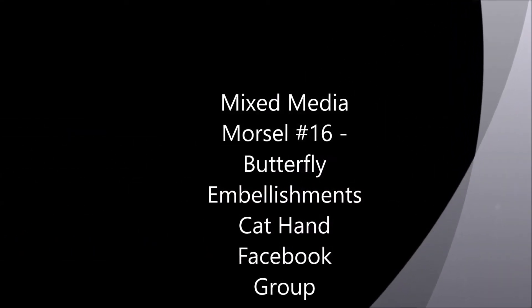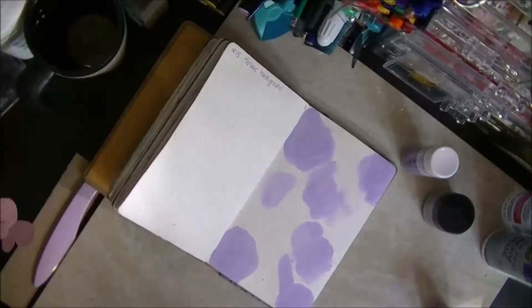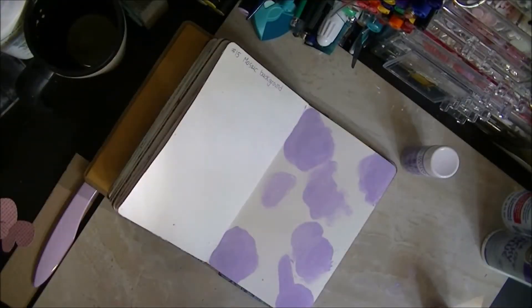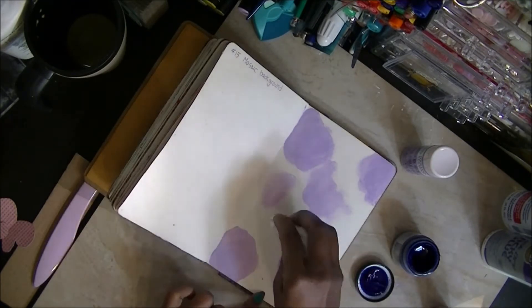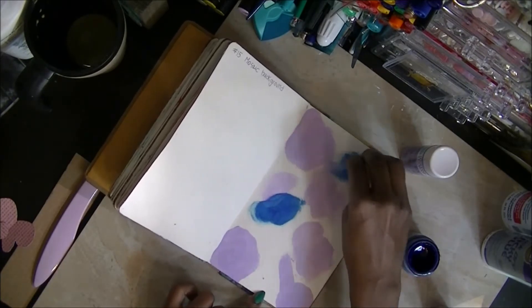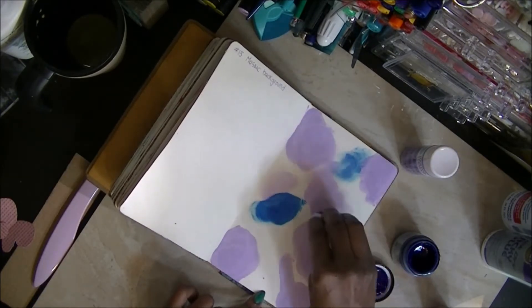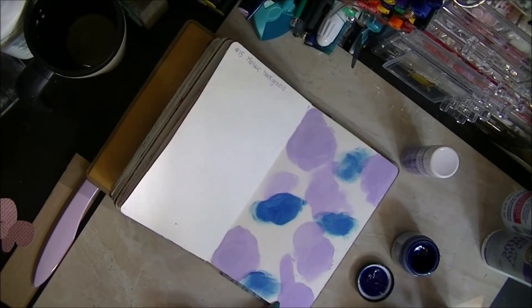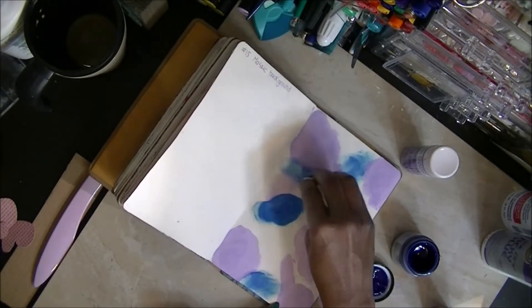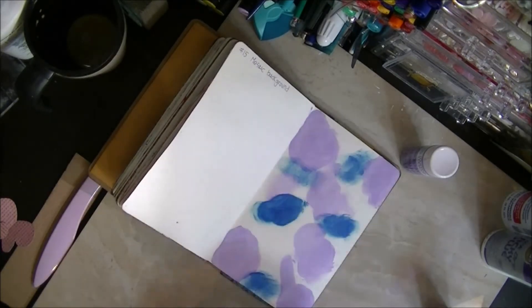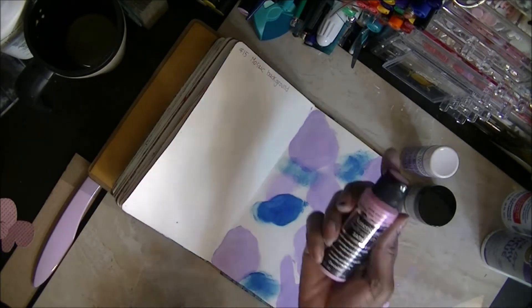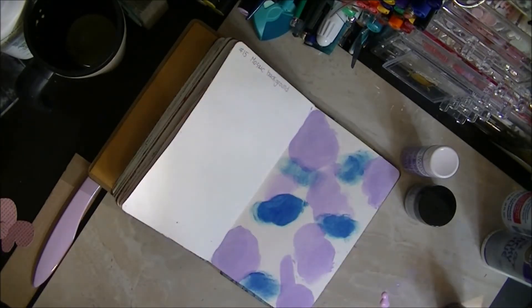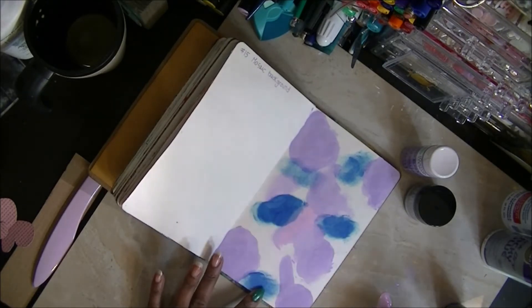Hi, this is Miss Dia D special things. I'm attempting to do a process video. This is the mixed media morsel number 16 butterfly embellishment. I'm using a baby wipe and some acrylic paints. The first one is hydrangea purple by Martha Stewart, and now I'm laying down some Claudine Helmuth studio paint called the smidge of purple, I mean blue.